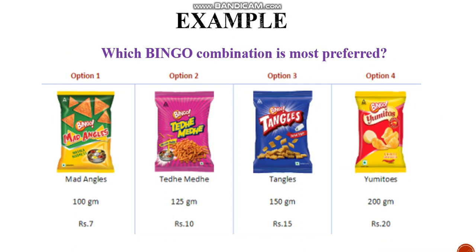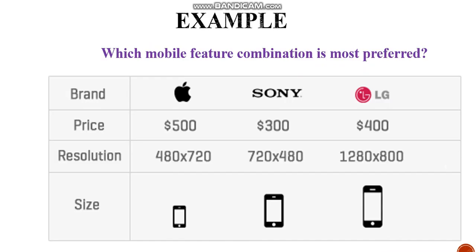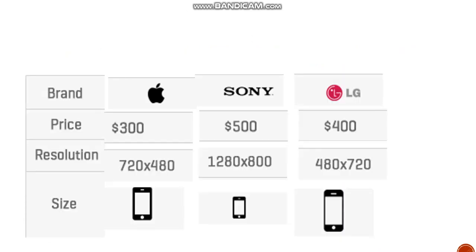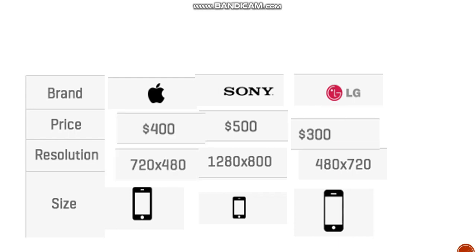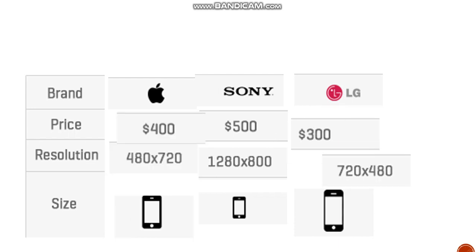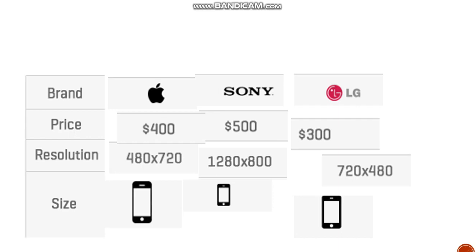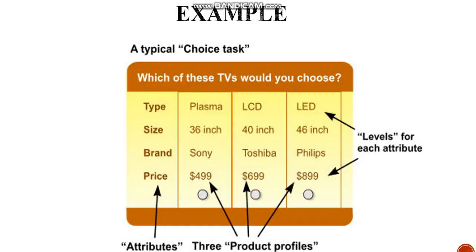We can have different combinations to ask customers. For example, how would you rate Mad Angles at 100 grams for 7 rupees, or Bingo Tedhe Medhe at 125 grams for 10 rupees? Similarly, we can see which mobile feature combination is most preferred. The brand does not have to stay the same — you can mix combinations: Apple with a different price and different resolution, or Sony with a different resolution.